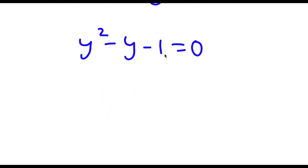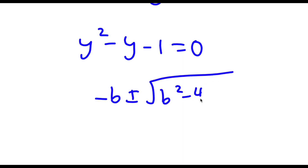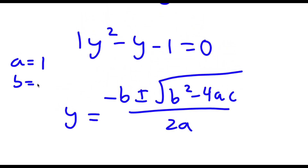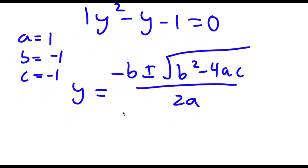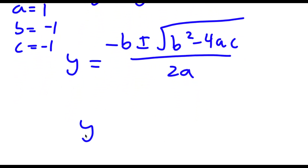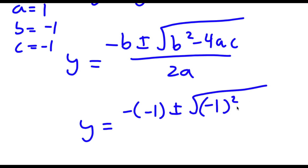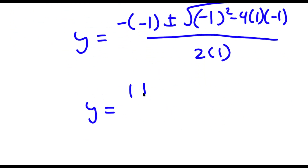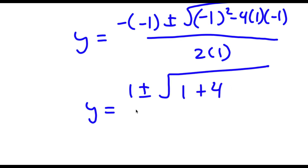To solve this I'm going to use the quadratic formula: negative b plus or minus the square root of b squared minus 4ac all over 2a. In this case a equals 1, b equals negative 1, and c equals negative 1. So I have negative negative 1 plus or minus the square root of negative 1 squared minus 4 times 1 times negative 1 all over 2 times 1. This simplifies to 1 plus or minus the square root of 5 over 2.